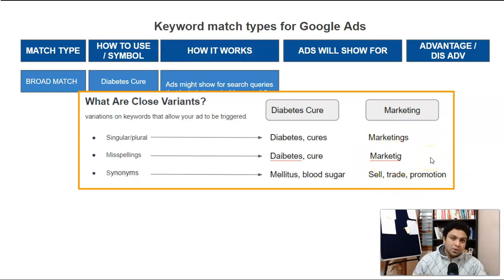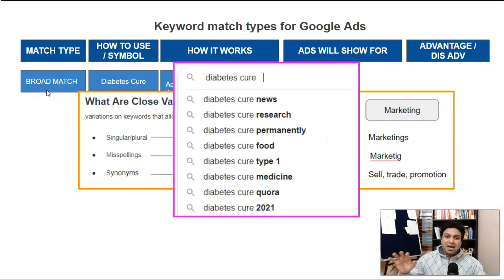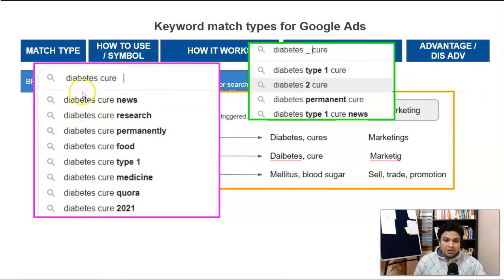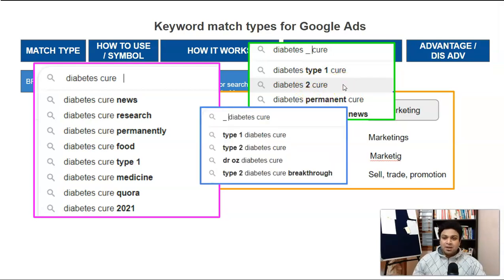We want to show our ad only for 'diabetes cure,' but with broad match our ad will show for all related things — like 'diabetes cure news,' 'research,' 'permanently,' 'food,' 'type 1,' 'medicine' — all those keywords in any order. You can see 'diabetes' with other words like 'type 1,' 'type 2,' 'permanently' — our ad will show to all of them, which we don't want.